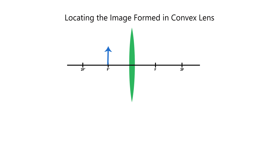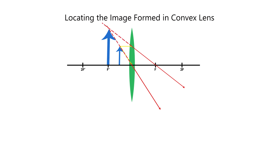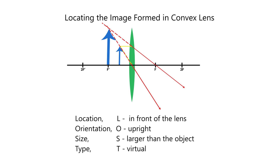Then we place the object between F prime and the lens. We observe that the refracted rays do not meet, but we can extend them to locate the image. The image is located in front of the lens, upright, larger than the object, and virtual since we extended the refracted rays.